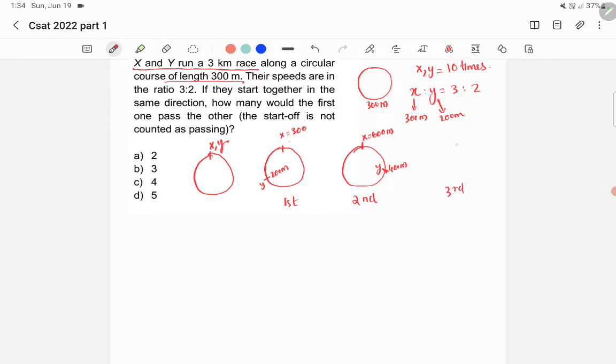In the third round, X completes 900 meters, so X came here again. Y completes 600 meters, which means Y is here again. So X and Y met for the first time in the third round.